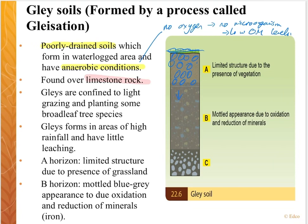Gleyed soils form in areas of high levels of rainfall but with little leaching. So there's a difference between your gleyed soils and your podzol soils — your podzol soils have a lot of leaching, whereas your gleyed soils have little leaching.